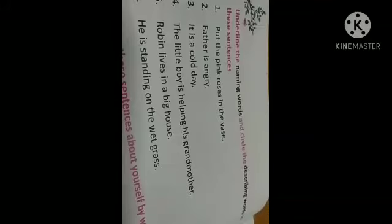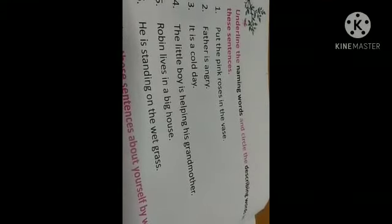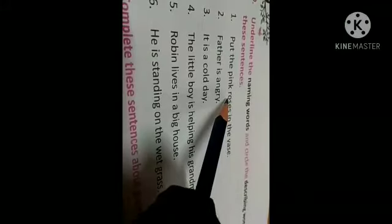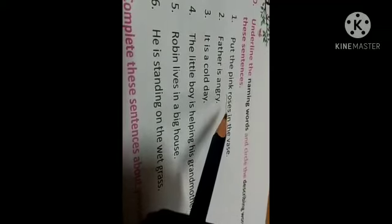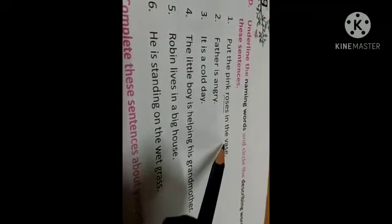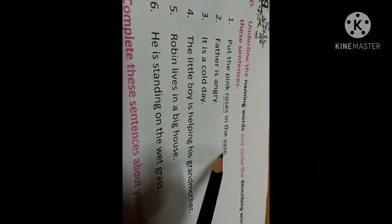Next one is, underline the naming words and circle the describing words in these sentences. Put the pink roses in the vase. Roses are naming words, we will underline. Which else do you find here the naming word? Vase. Yes, that is also name of a thing.